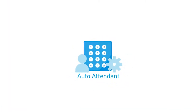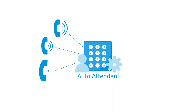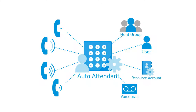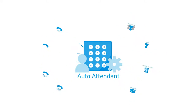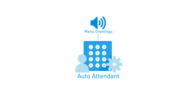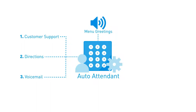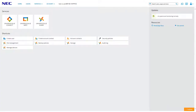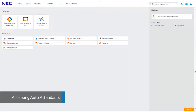An auto attendant is a robust voice services tool that allows you to automatically manage many inbound calls at once without the need of a live telephone operator or receptionist. The attendant can be used to provide callers with general information from audio greetings, allow callers to be transferred to a service or extension by using voice menus, and automatically route calls in your organization based on your business's scheduled work hours.